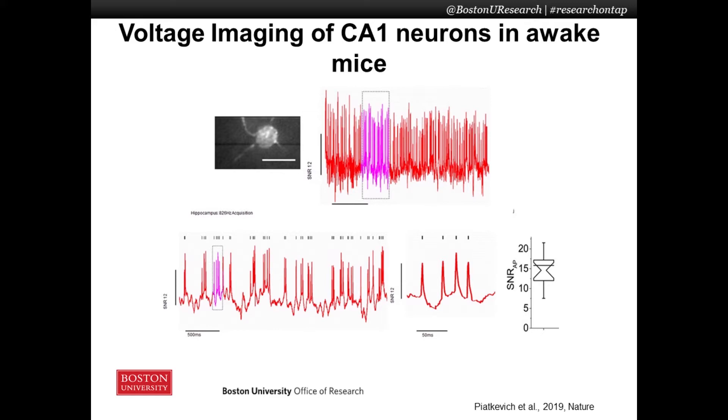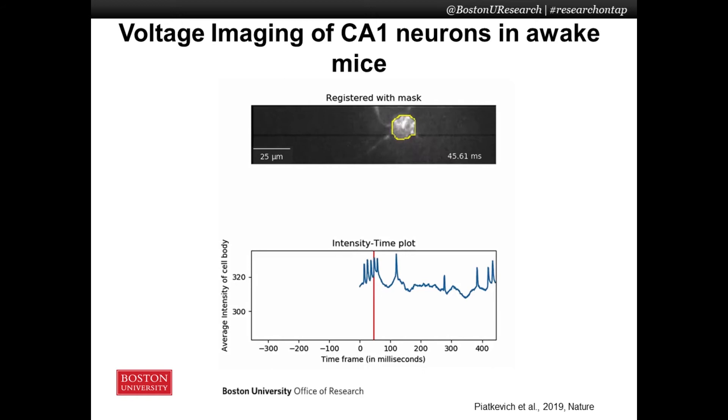Imaging voltage is really hard. People have been doing calcium imaging, which is much easier, but voltage imaging requires the sensor to be on the cell membrane. Through a large-scale screening effort in collaboration with Ed Boyden's group at MIT, we found and named this molecule SomArchon. This is a hippocampal neuron expressing this particular voltage sensor on the plasma membrane.